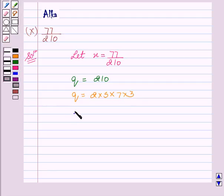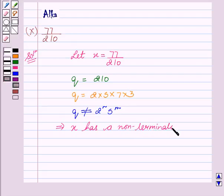We see that Q is not of the form 2 to the power N and 5 to the power M. This implies that the given rational number X has a non-terminating repeating decimal expansion.